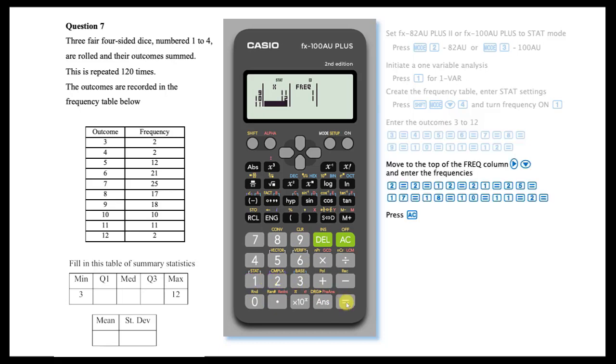Next, enter the frequencies of these outcomes. Move the cursor to the FREQUENCY column by arrowing right, then move to the top of the column. This can be done by arrowing up repeatedly or, using a clever shortcut, arrow down once to cycle from the bottom back to the top.